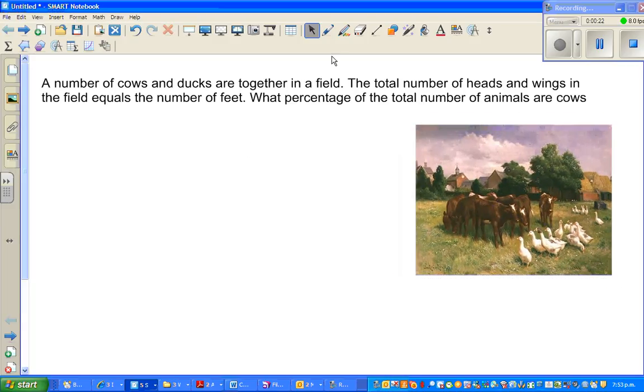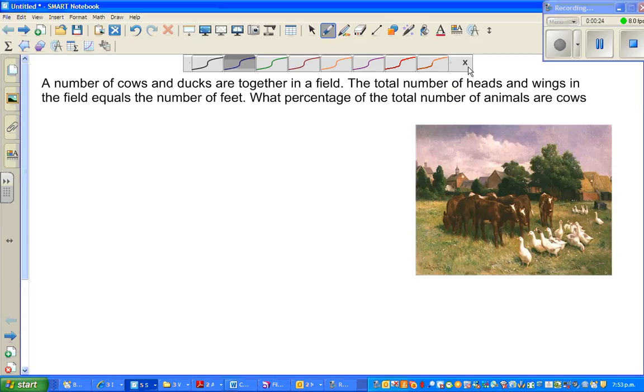Let's read the question. The number of cows and ducks are together in a field. So now this is a field. You've got cows and ducks. The total number of heads and wings in the field equal to the number of feet. What percentage of the total number of animals are cows?